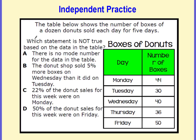This is your independent practice. The table below shows the number of boxes of a dozen donuts sold each day for five days: 44 boxes on Monday, 30 on Tuesday, 40 on Wednesday, 36 on Thursday, 50 on Friday. Which statement is not true based on the data in the table? Go ahead and work through it — you're looking for the one that is not true.